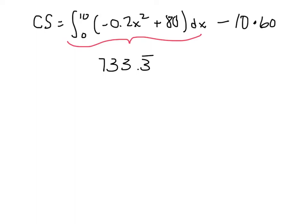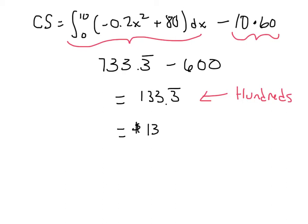And then, of course, 10 times 60 is 600, so I'm going to subtract that off. And the value here comes out to be 133.3 repeating. But what we need to remember is this is measured in hundreds. And so if we want to get the consumer surplus, we have to multiply by 100.